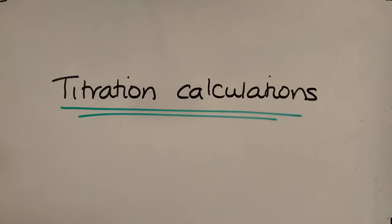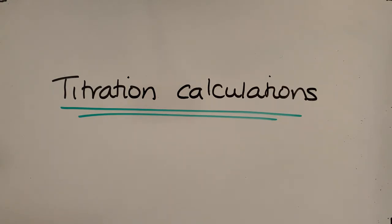We're now going to look at how to do acid-base titration calculations. This involves looking at the reaction between an acid and a base, which is a neutralization reaction. One of the reasons we do titrations is to find out an unknown concentration. For example, if we have an acid where we don't know the concentration, we will titrate it with an alkali where we do know the concentration, and then we can do the calculations to work out that unknown concentration.